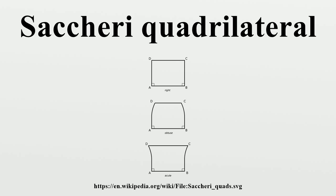For a Saccheri quadrilateral ABCD, the sides AD and BC are equal in length and perpendicular to the base AB. The top CD is the summit or upper base, and the angles at C and D are called the summit angles. The advantage of using Saccheri quadrilaterals when considering the parallel postulate is that they place the mutually exclusive options in very clear terms: are the summit angles right angles, obtuse angles, or acute angles?